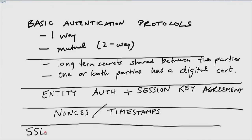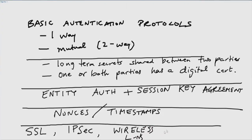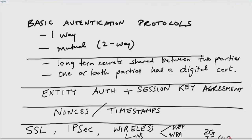Some examples of widely used protocols: SSL is the protocol for use on the web at the transport layer. Then we have IPsec which is at the network layer. Then we have various wireless protocols for wireless LANs, for example WEP, WPA, 802.11i, and then other wireless protocols for cell phones such as 2G, 3G, 4G etcetera. All of these have building blocks that are indeed what we considered yesterday.